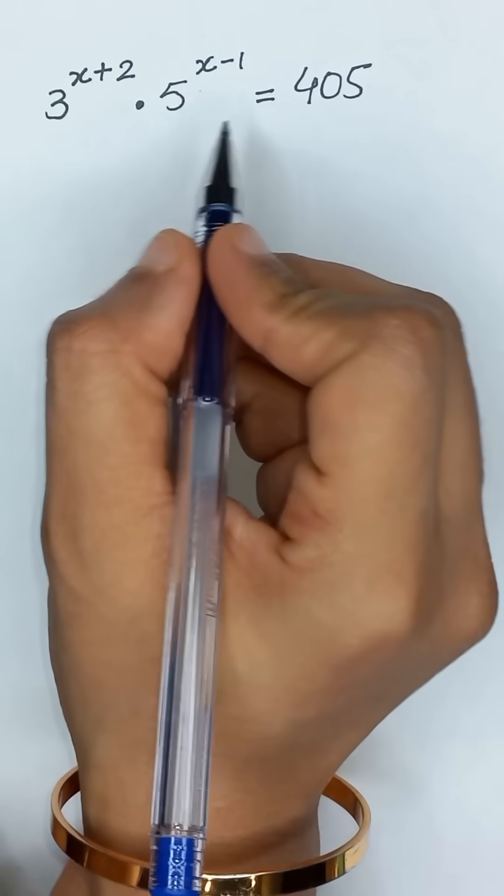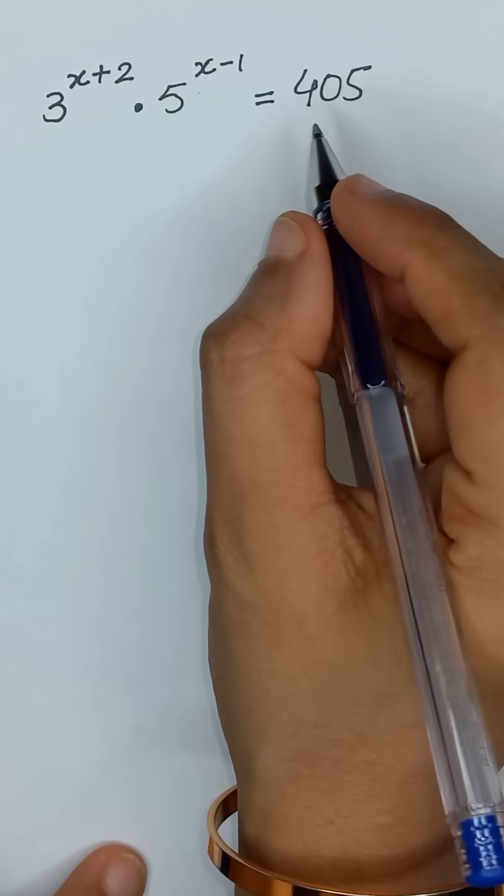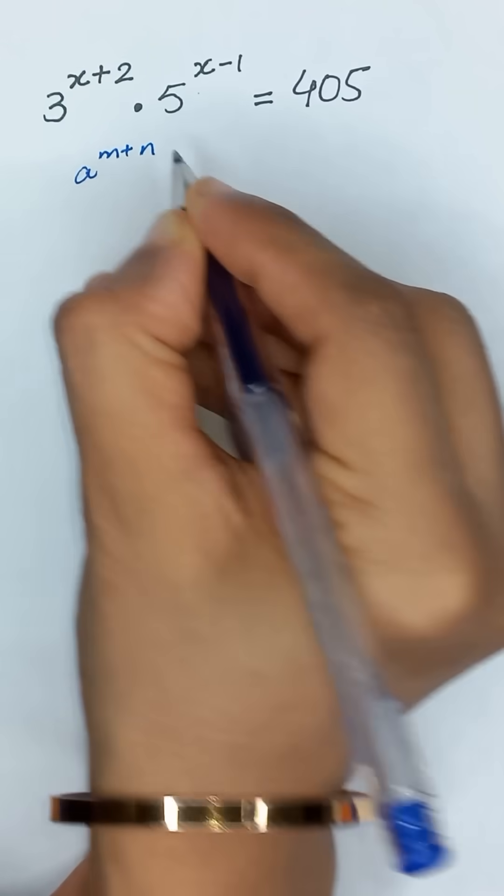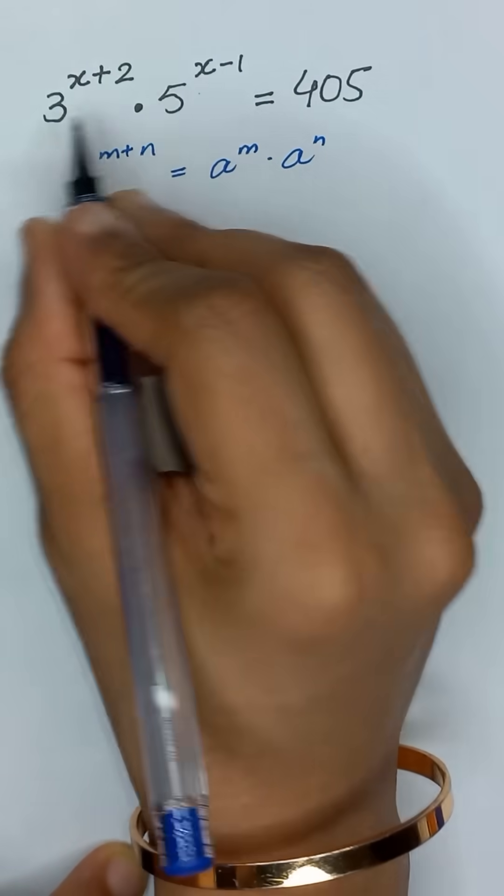3 to the power x plus 2 times 5 to the power x minus 1 is equal to 405. As we know that a to the power m plus n is equal to a to the power m times a to the power n.